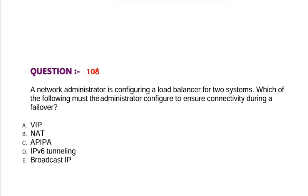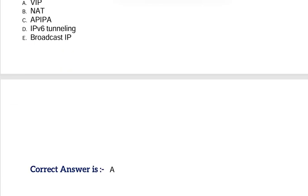Question: A network administrator is configuring a load balancer for two systems. Which of the following must the administrator configure to ensure connectivity during a failover? Option A, VIP. Option B, NAT. Option C, AP IPA. Option D, IPv6 tunneling. Option E, Broadcast IP. Correct answer is Option A.